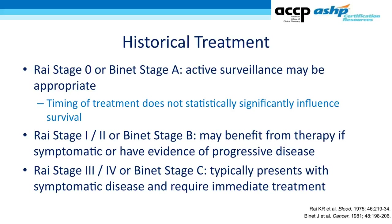Rai stage 1 or 2, or Binet stage B patients were more symptomatic or had evidence of progressive disease, so it may have been appropriate to start therapy. Rai stage 3 and 4, or Binet stage C patients were highly symptomatic and required immediate treatment. However, we don't use this staging system to determine when or how to start treatment in 2021.